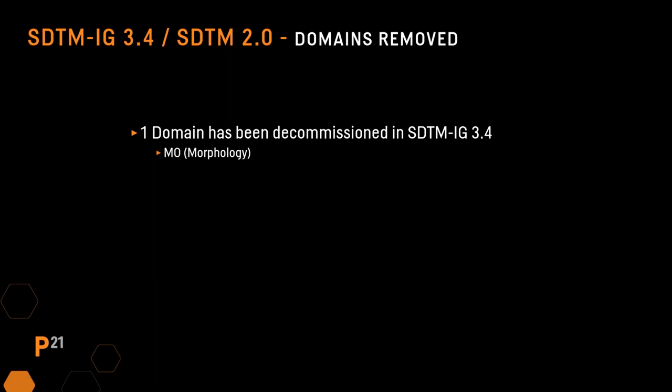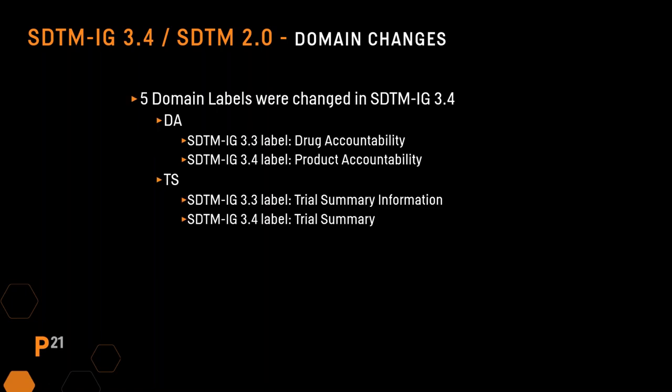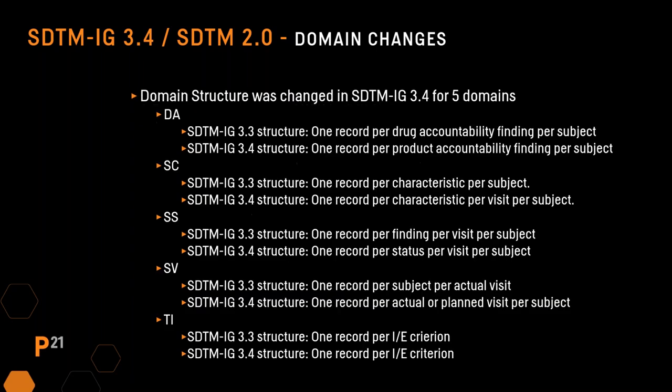There were a few domain changes. In SDTM 3.4, domain labels were changed for the DA and TS domains. DA was changed from drug accountability to product accountability, and TS was changed to remove the word information. Description was changed for five domains — mostly just a change in wording, except for the SC subject characteristics domain, where per visit was added.